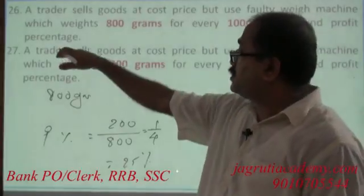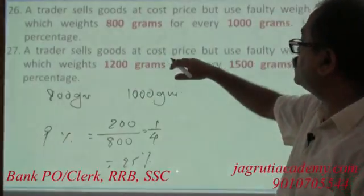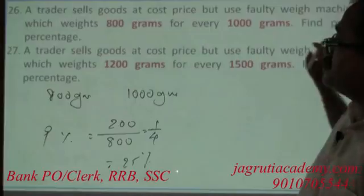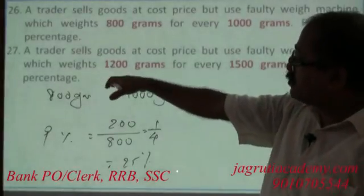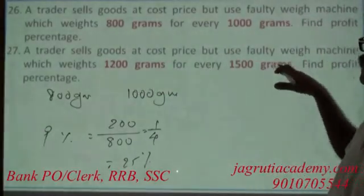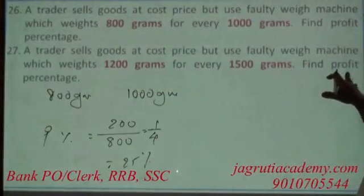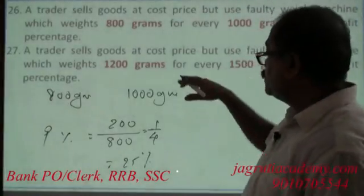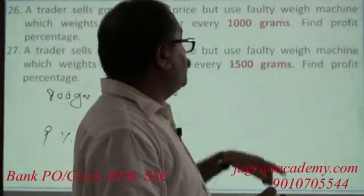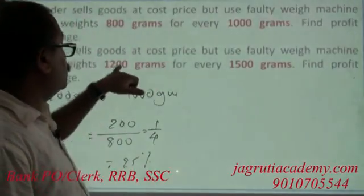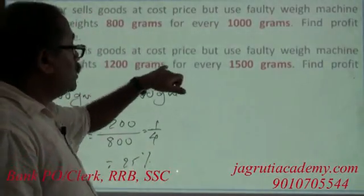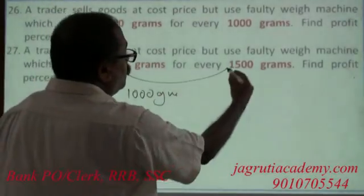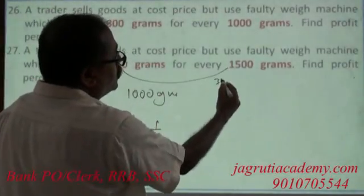Second question: a trader sells goods at cost price but uses a faulty weight machine which weighs 1200 grams for every 1500 grams. He is collecting money for 1500 grams but delivering only 1200 grams, so for every 1200 grams he makes a profit of 300 grams.